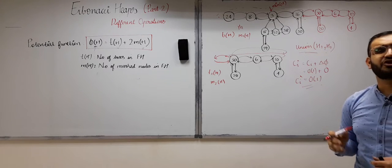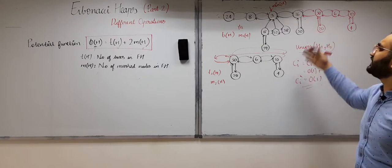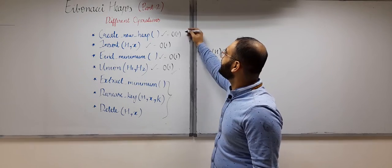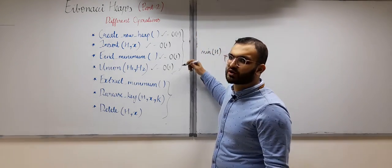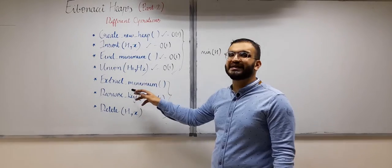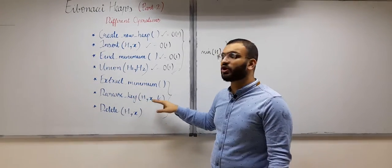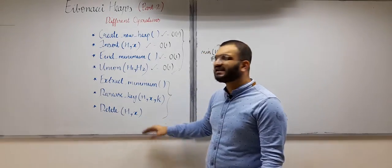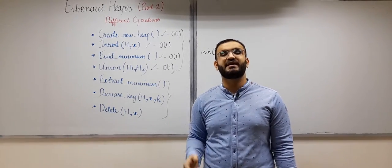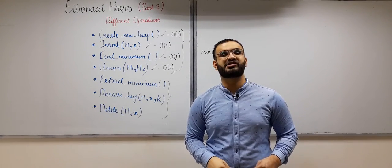So we have now covered the insert operation, the create new heap operation, finding the minimum element, and the union operation between two Fibonacci heaps. The amortized cost for each of these four operations is O(1). In the next video, we will learn how to extract or delete the minimum element, how to perform the decrease key operation, and how to delete any element from a Fibonacci heap — the relatively more complicated operations requiring multiple steps.